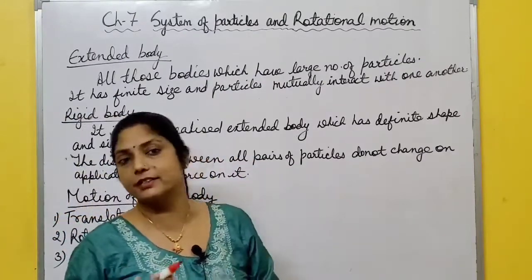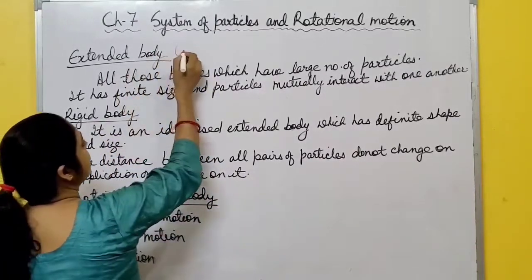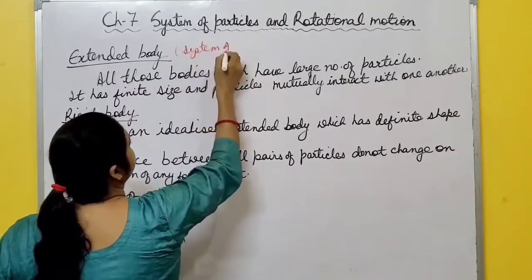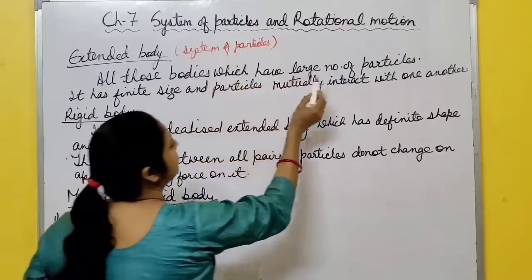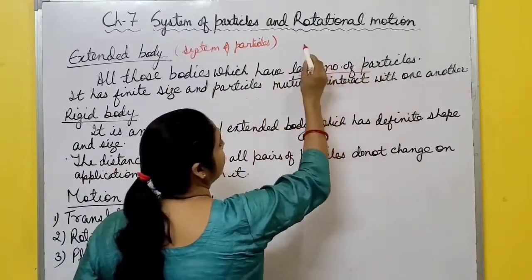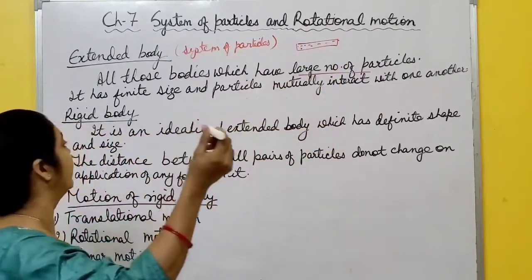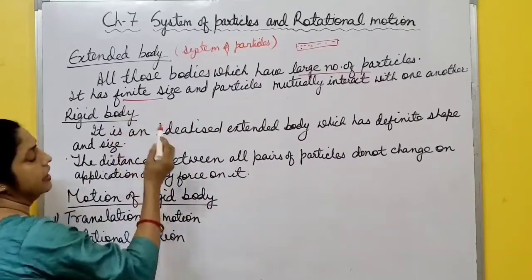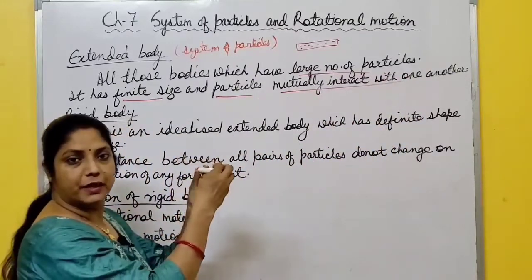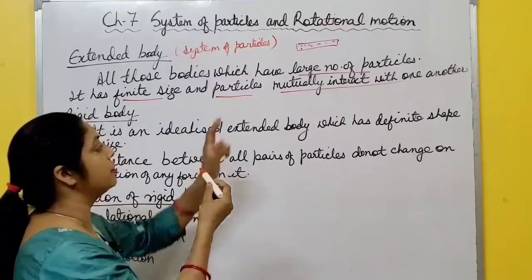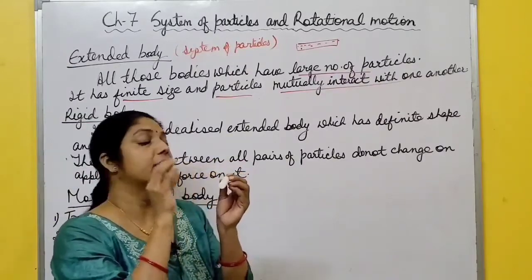What is an extended body? It means all those bodies which have a large number of particles. This marker has a large number of particles inside it, so this is an extended body. It has finite size and particles mutually interact with one another. When you apply some force on this extended body, deformation takes place - for example, a balloon.